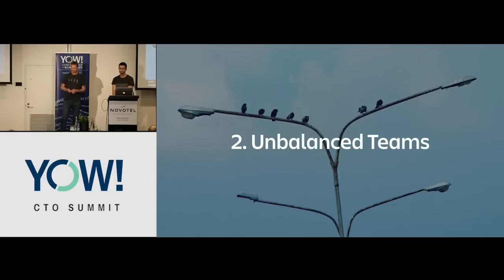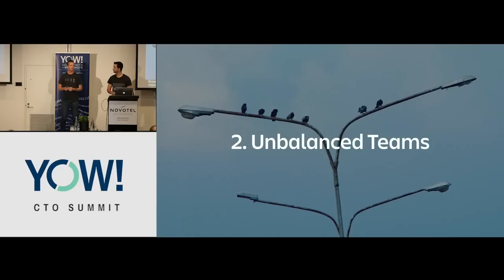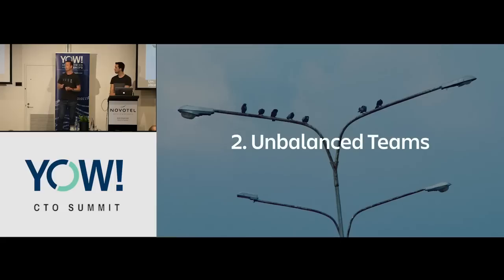We had a simple fix: we split the project into two streams. Each stream had one design lead, one engineering manager, and the product manager was across both. Now the engineers knew who to turn to, who was responsible for the project — we'd effectively formed two healthy triads. An unbalanced team can come from different levels of motivation, different levels of maturity, more years of experience, or simply underperforming leaders.